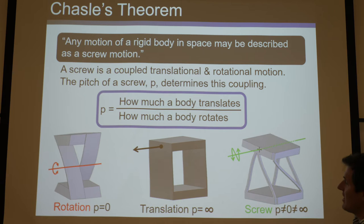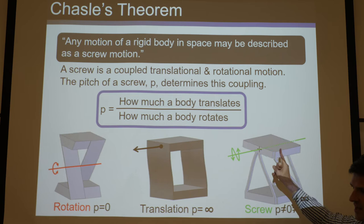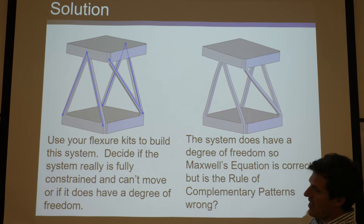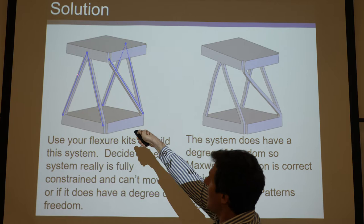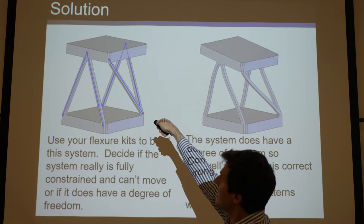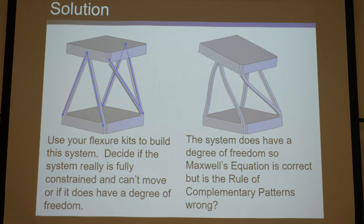A lot of people think this should be two degrees of freedom because it's rotating and translating, but no — it's coupled. It's very different if you have two degrees of freedom. For instance, if you go back to this and took this beam out, then what you would have is four wires. Six minus four is two, so you'd expect two degrees of freedom. And now you can draw a red line that connects these because it intersects all four constraints.